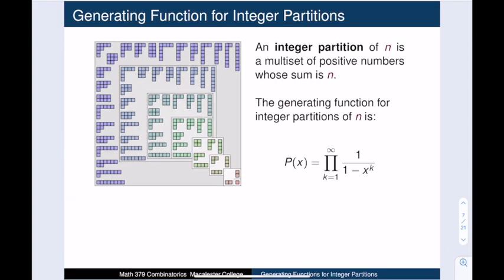Now we will generalize this process to find the generating function for integer partitions of n. An integer partition of n is a multi-set of positive numbers whose sum is n. We can also view an integer partition as an array of boxes where the row sizes are non-increasing — these are called Ferrer's diagrams. This picture displays all Ferrer's diagrams for integer partitions for n between 1 and 8.